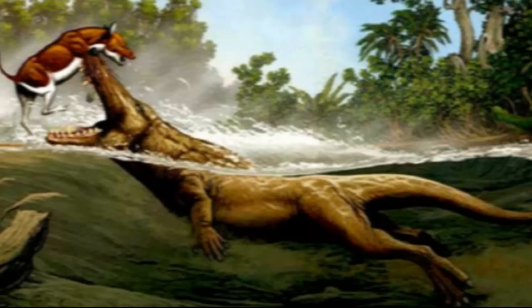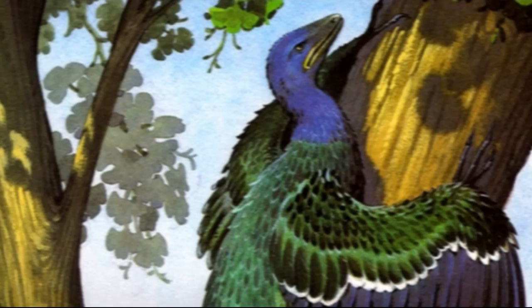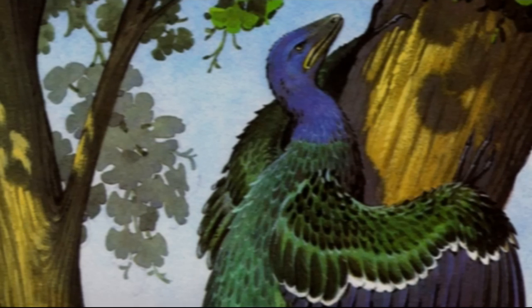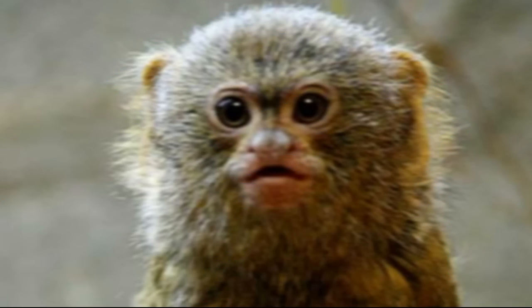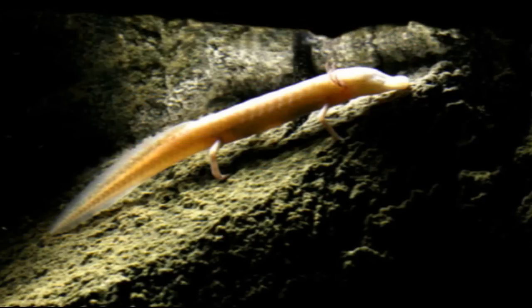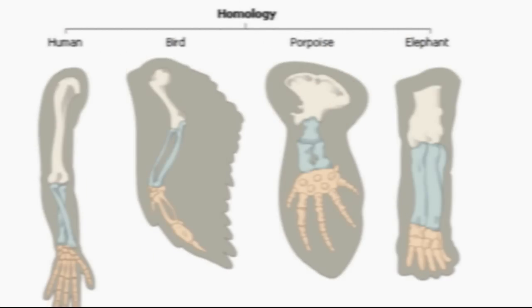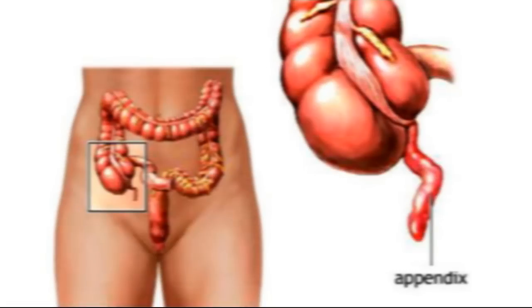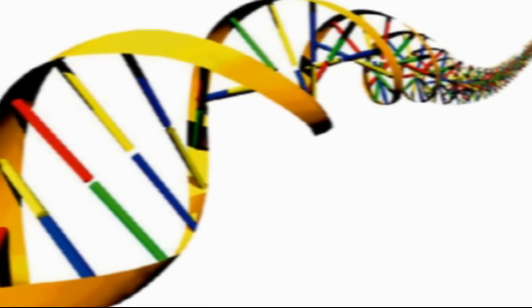Not only do we find multitudes of transitional species all throughout the fossil record, we also find within currently living animals a great variety of evidence displaying ongoing transitional processes. For example, homologous structures, vestigial organs, and even tucked away within the genetic code.